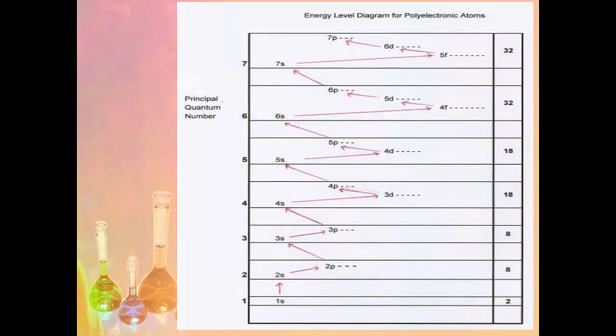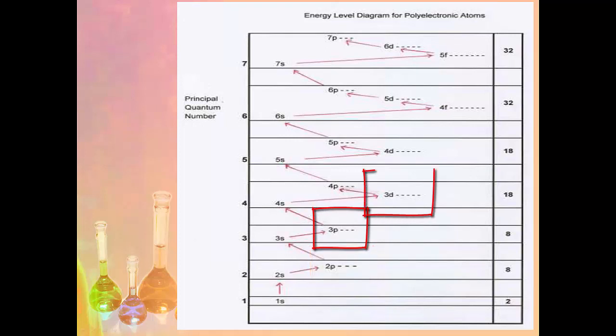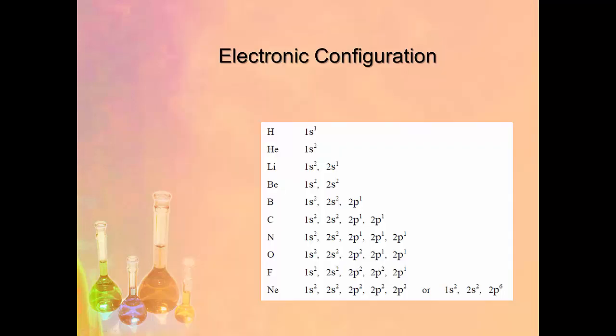For polyelectronic atoms — any atom with more than one electron, which is essentially all atoms except hydrogen — the filling order is: 1s, 2s, 2p, 3s, 3p, 4s, 3d, and so on. This diagram is provided in the exam, and it shows you that the 2p subshell has three orbitals, the 3p has three, and the 3d has five, so you'll always know how many boxes to draw when completing an orbital diagram.